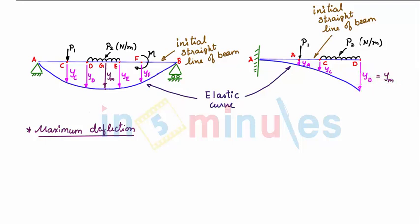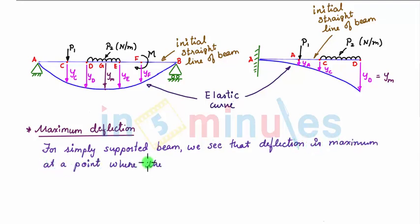Now for the time being let us consider only a simply supported beam. For simply supported beam we see that deflection is maximum at a point where the slope is zero. So at this point where we see that your deflection is maximum, the slope at this point is zero.